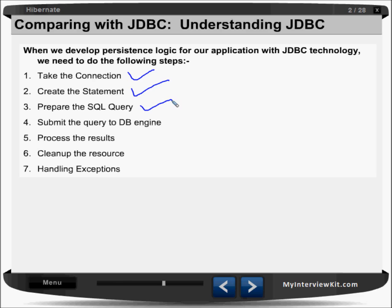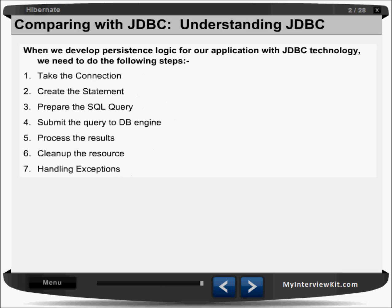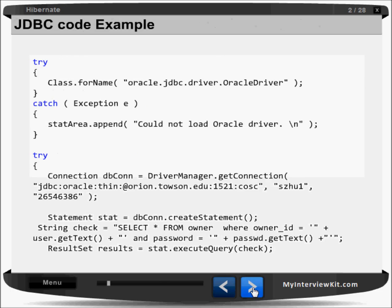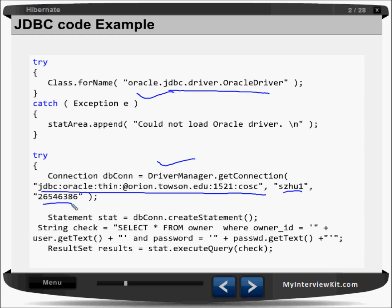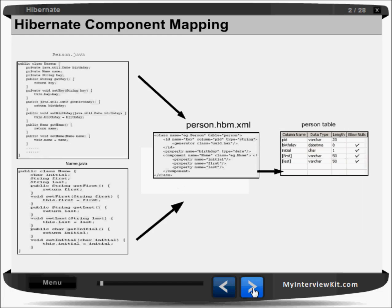We submit the query to the database engine; if some result is coming we process it and display it, and then we do cleanup of resources, handle exceptions — and sometimes we forget to do that. But all these things are not required in Hibernate. In normal JDBC coding you write Class.forName() to load the drivers, do connections passing URL, username, and password, create statements, write queries, call executeQuery(), and get results — all of that we do in JDBC.